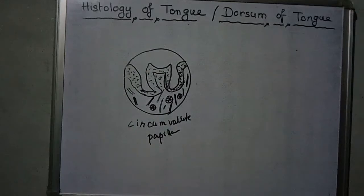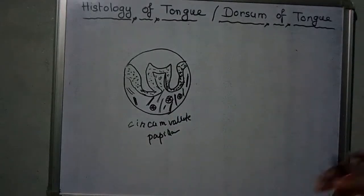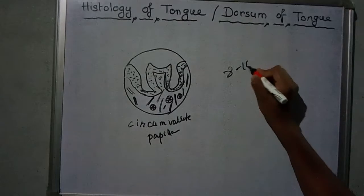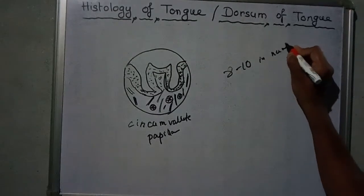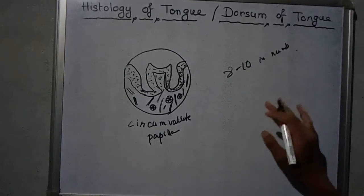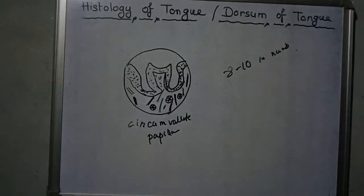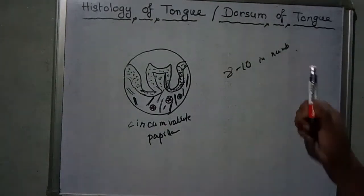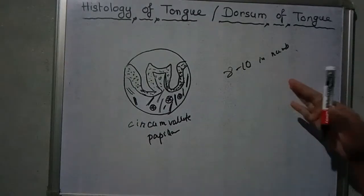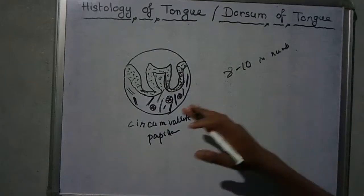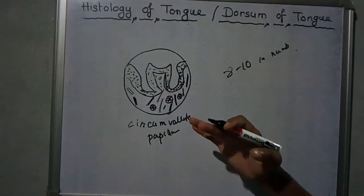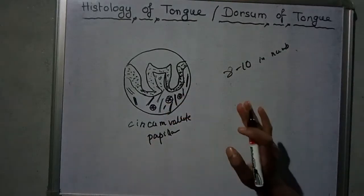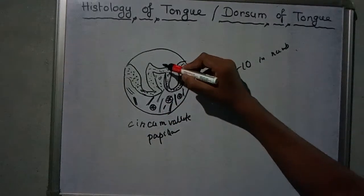The circumvallate papillae are total eight to ten in number. They do not protrude above the tongue but are bounded by a deep cervical furrow. Their free surfaces show numerous secondary papillae covered by smooth epithelium. This epithelium contains taste buds.